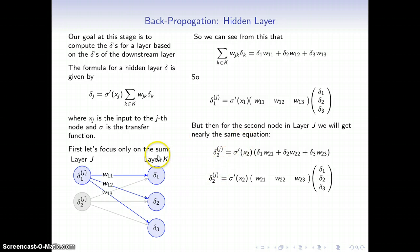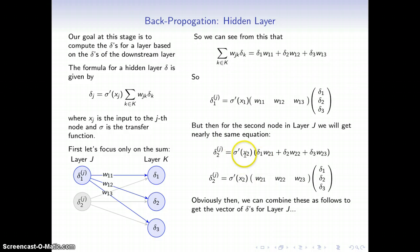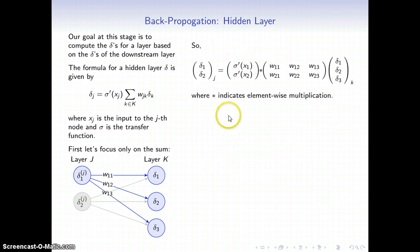I'm going to do the exact same thing for the second node in layer J. It's the derivative of the transfer function evaluated at the input to this second node, which is just a scalar, times the sum of the product of the weights with the output layer deltas, or the other layers deltas. This part right here, I want to rewrite as a matrix product. This is instead the weights from 2 to 1, 2 to 2, 2 to 3, times the same column vector of deltas. This should be extremely reminiscent of what we did before.